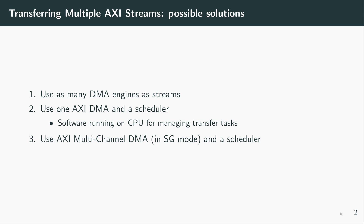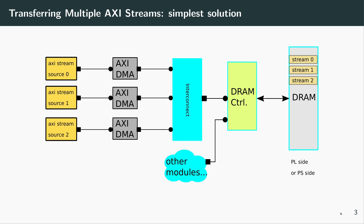Imagine you want to transfer multiple parallel streams from the PL to the PS. We have multiple incoming streams that arrive at AXI DMA modules. The AXI DMA modules start copying this data into the DRAM memory, where we have buffers for each of these streams. Each buffer is managed by an instance of the AXI DMA driver, so we will have three driver instances running in the Linux kernel, each responsible for handling one AXI DMA.